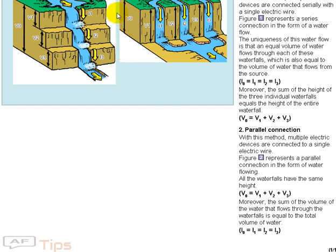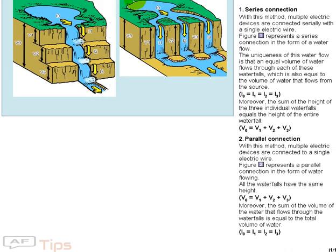Moreover, the sum of the volume of water that flows through the waterfalls is equal to the total volume of water: I0 equals I1 plus I2 plus I3.